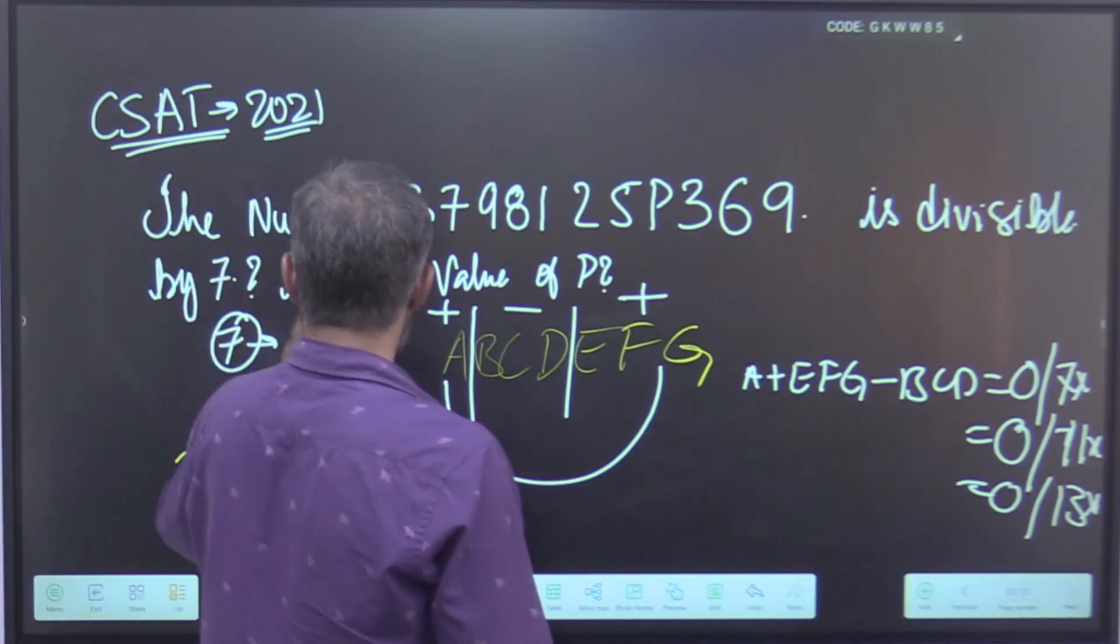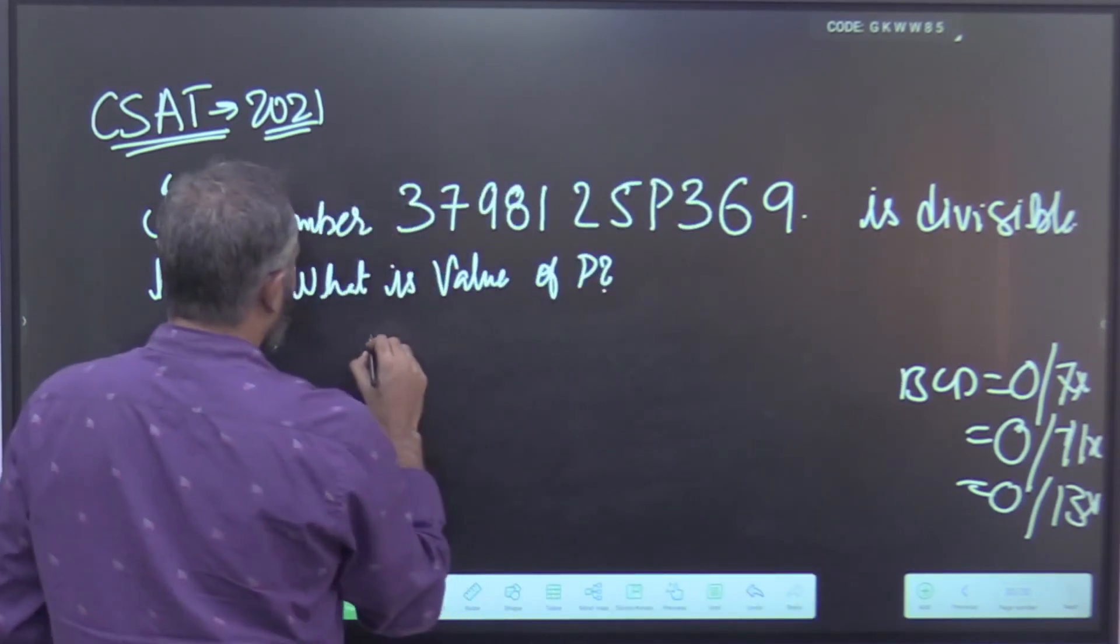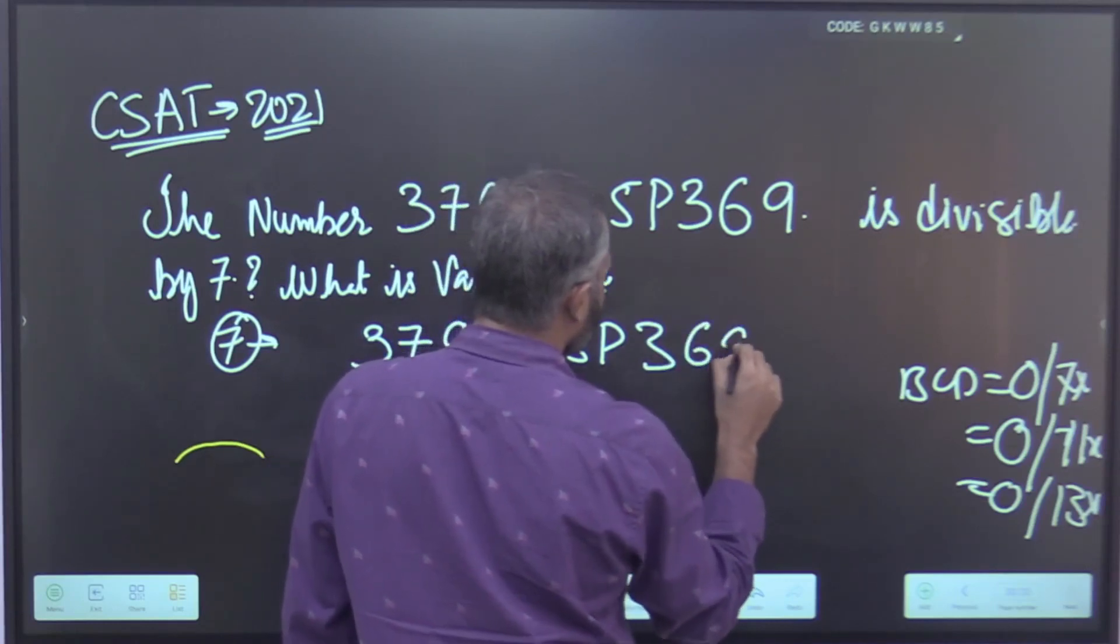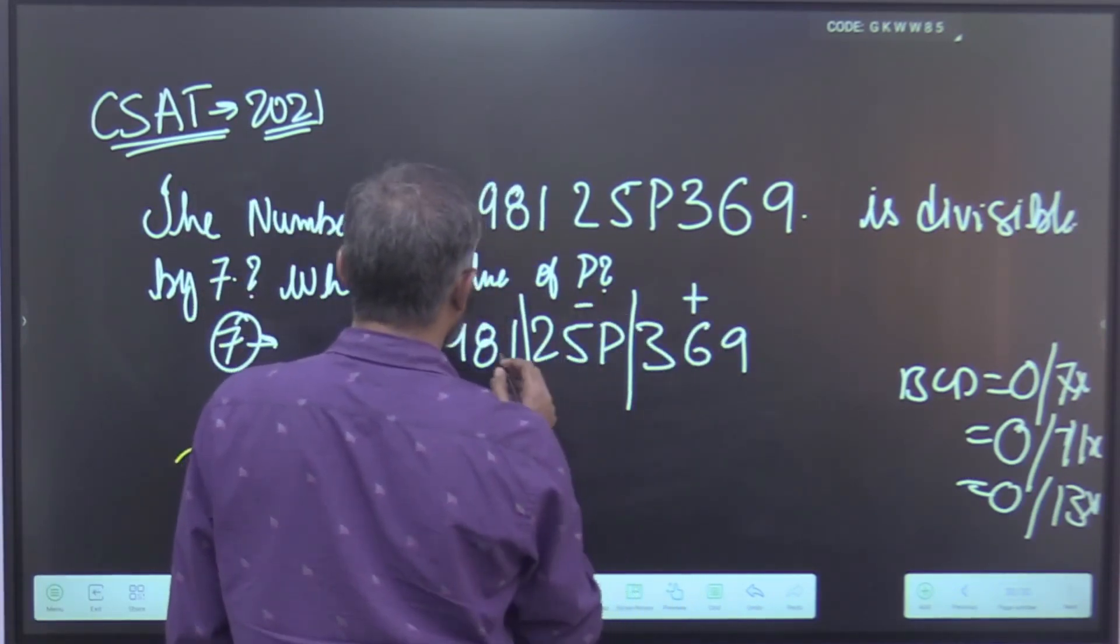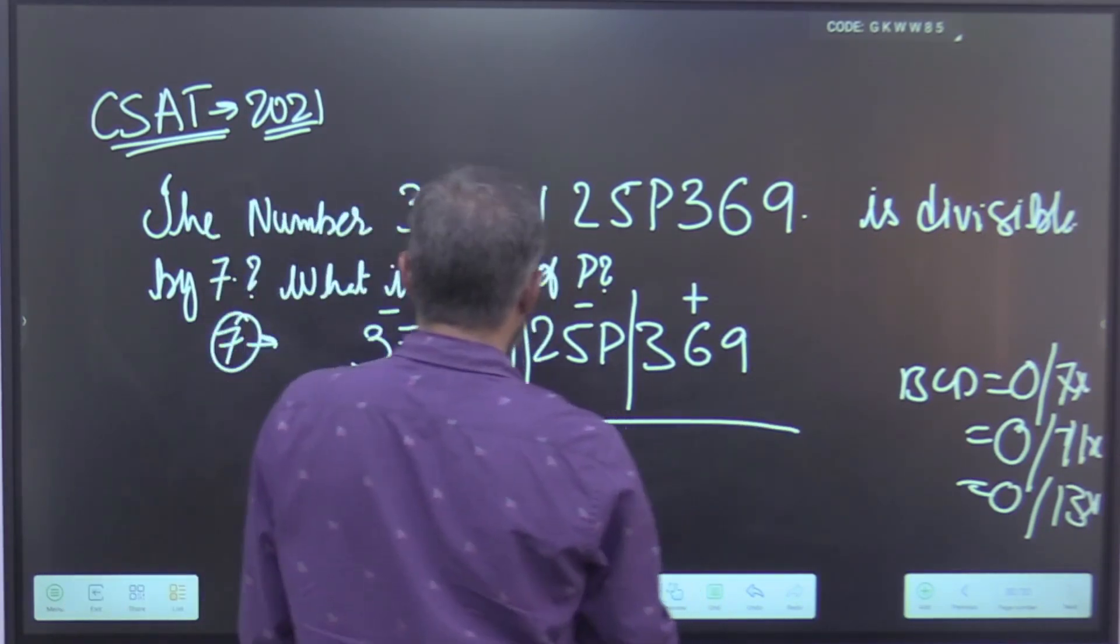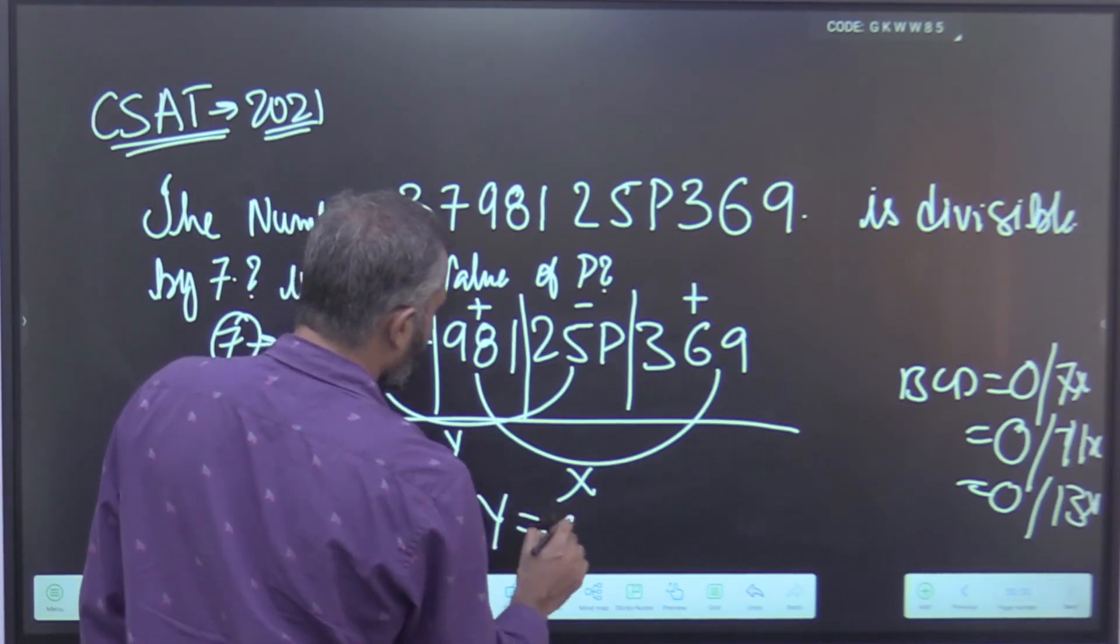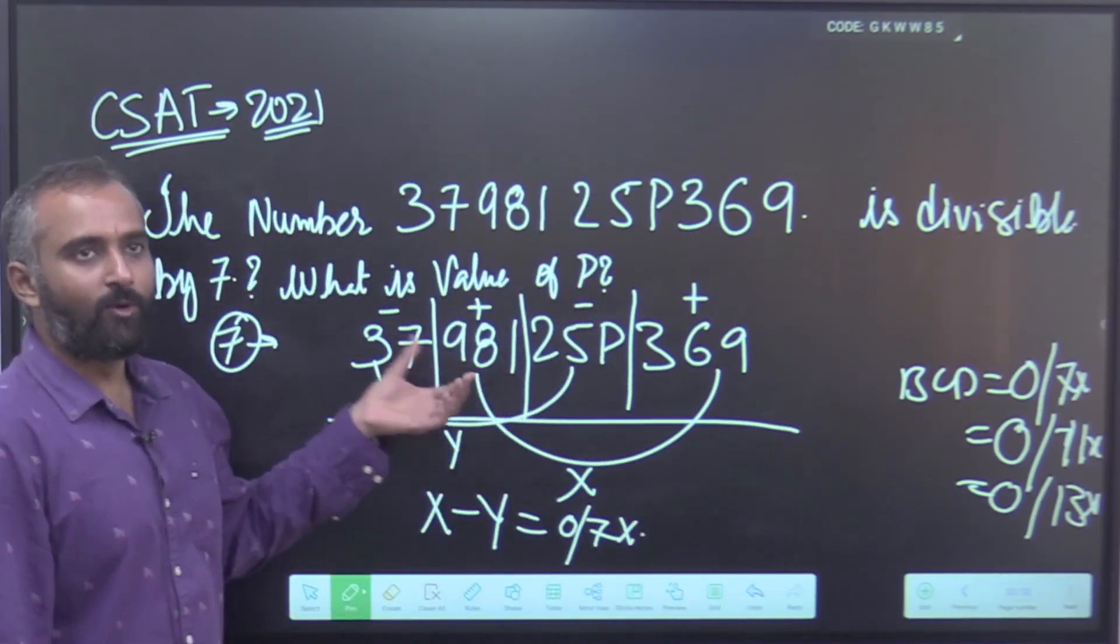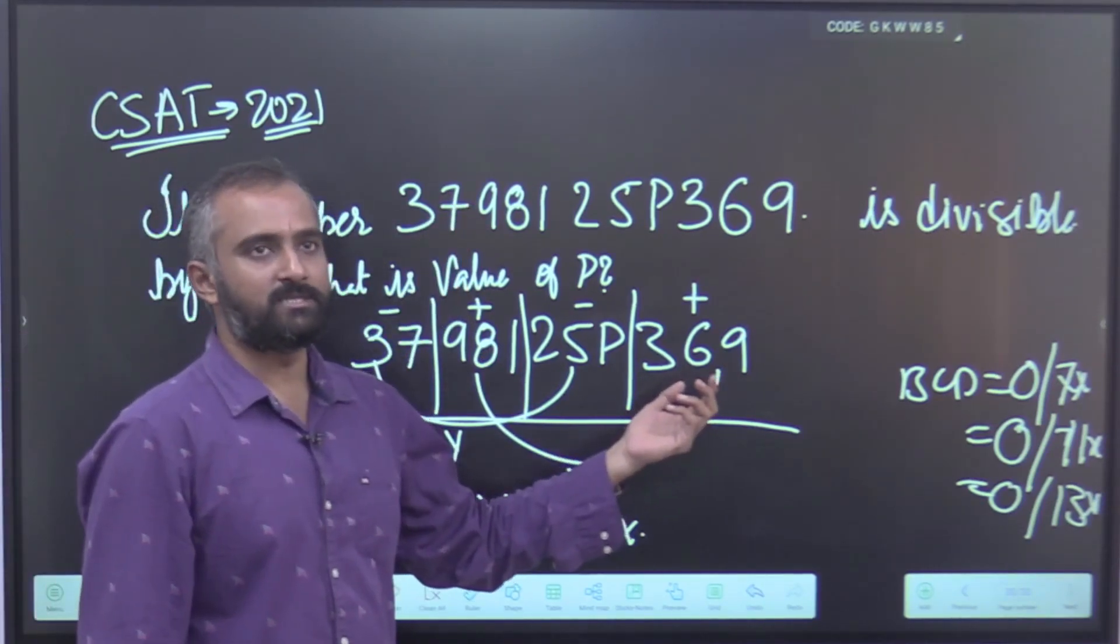Now, let us apply this to 3798125P369. The divisibility rule of 7 is divide the number into a block of 3 and assign alternate symbols. This is x minus y, and x minus y should be 0 or a multiple of 7. Now, if you do it in this way, knowing the divisibility rule does not help you solve this problem because the complexity is more, but complexity has not decreased by that much.